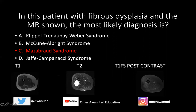A clue that this is an intramuscular myxoma is that it's light bulb bright on T2, and there's a little rim of fat around part of the lesion. A myxoma can have a rim of fat or bright signal along either the superior or inferior margin. Inferiorly we don't see it, but superiorly we do see a small rim of fat.